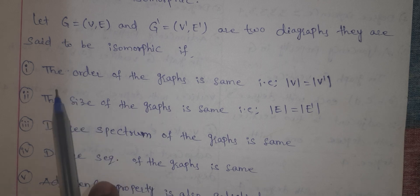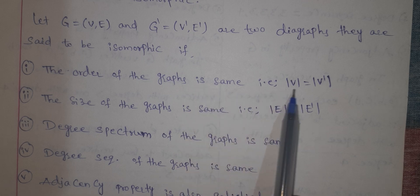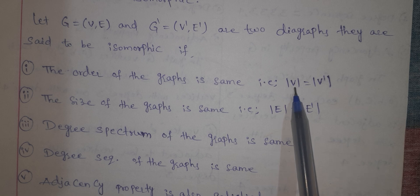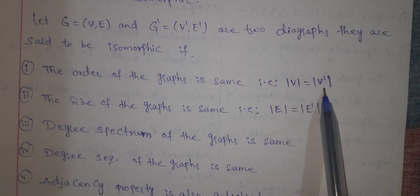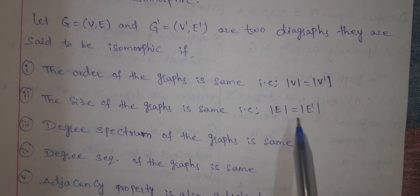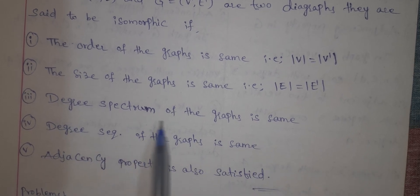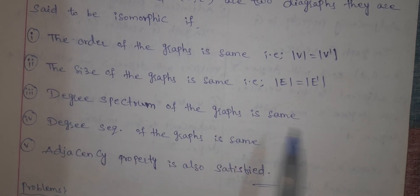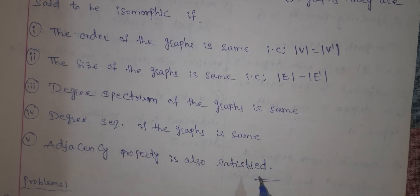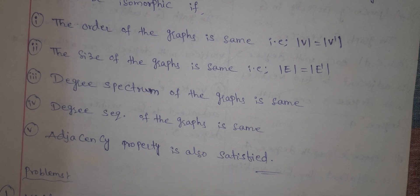See here. The first condition: the order of the graph is the same, that is the number of vertices — V equals V dash. The second: edges are the same. The third: edges are the same. The fourth: the degree spectrum of the graph is the same. The fifth: you can verify the degree sequence and the adjacent properties.